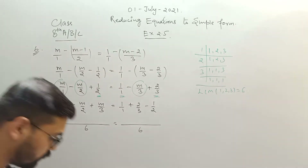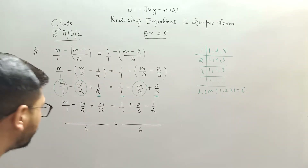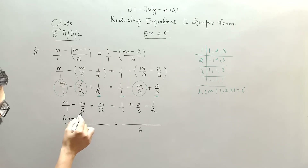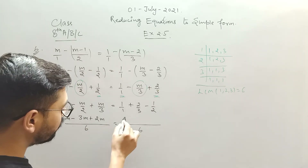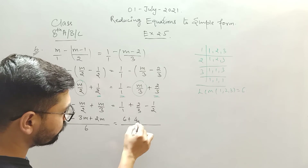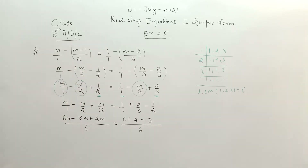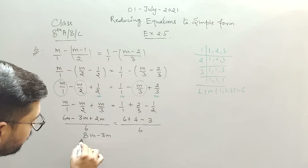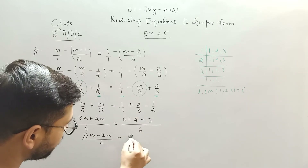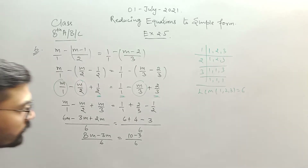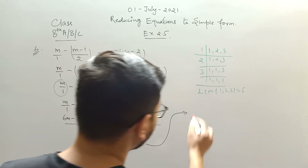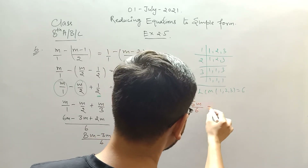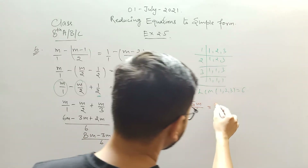With LCM 6: 1 six is 6 into numerator; 2 threes are 6 into numerator; 3 twos are 6 into numerator. Similarly on the RHS: 1 six is 6; 3 twos are 6; 2 twos are 4; 2 threes are 6; 3 ones are 3. So 6 plus 2 gives 8m minus 3m divided by 6. And 6 plus 4 gives 10 minus 3 divided by 6.